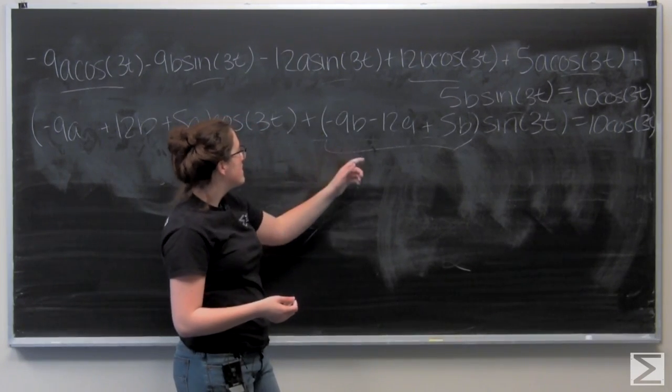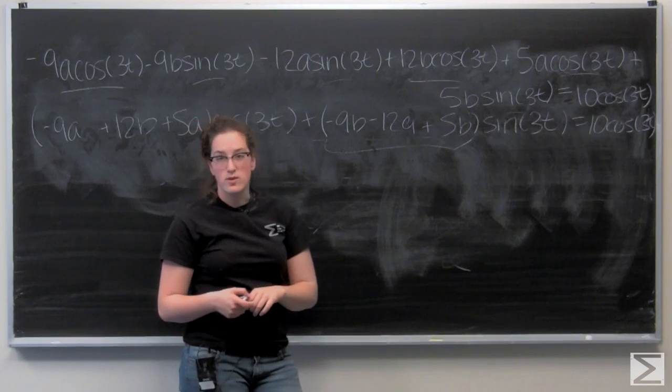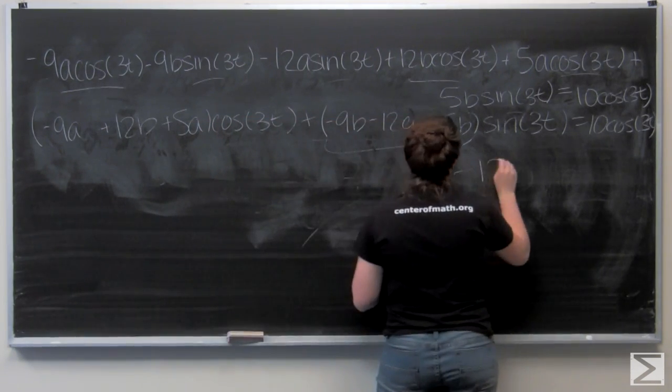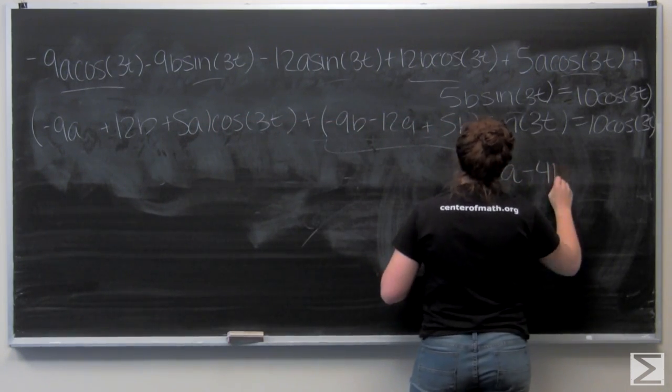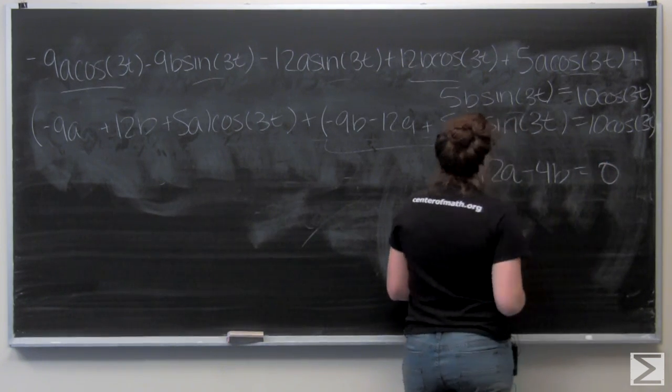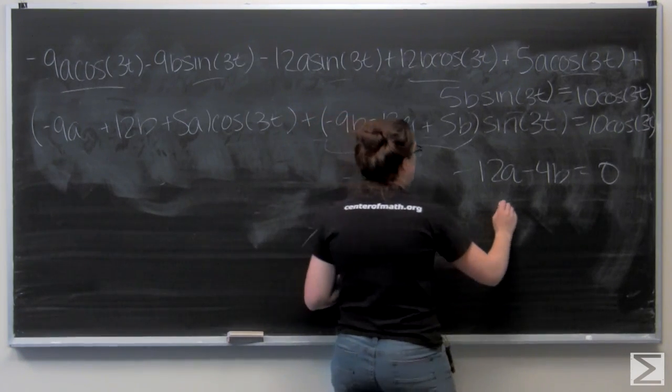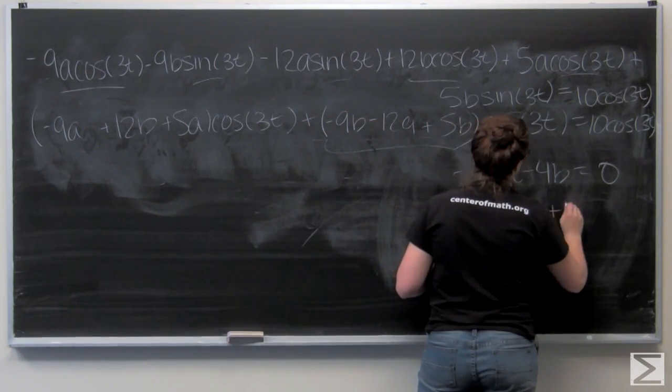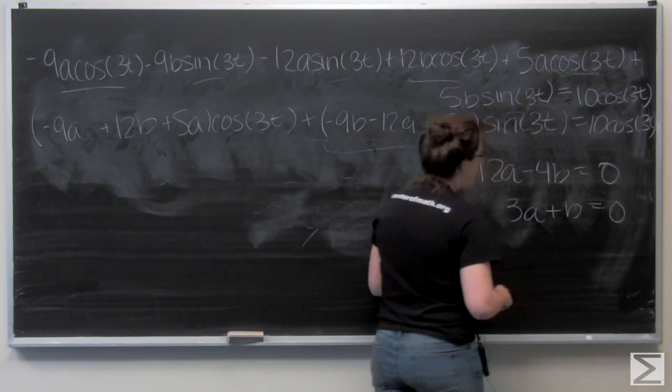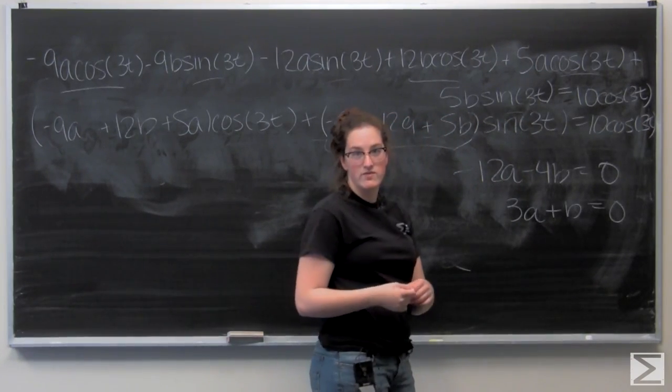And that is negative 12a minus 4b. And I can go ahead and divide both sides of the equation by negative 4. So I get 3a plus b equals 0, and b equals negative 3a.